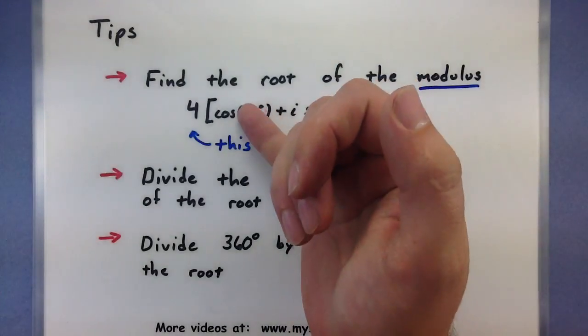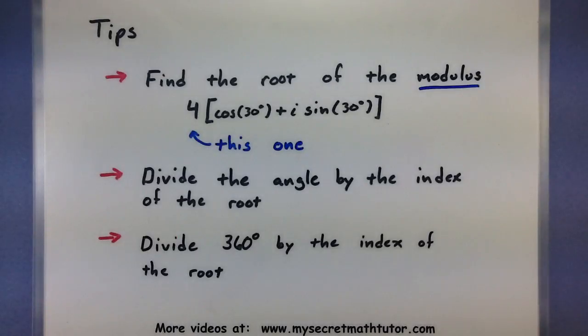The next part is we'll look at the angle on the inside, and we'll divide it by the index of the root. So whatever angle that is, if we're taking a square root, we'll divide things by two. Taking a third root, we'll divide things by three. Whatever it is, divide by the root.